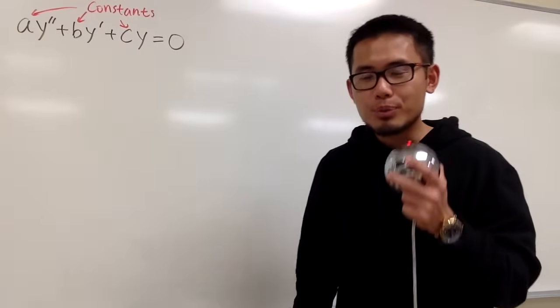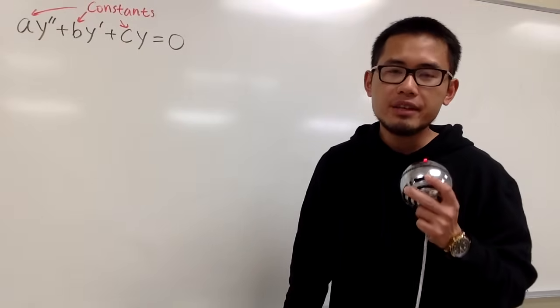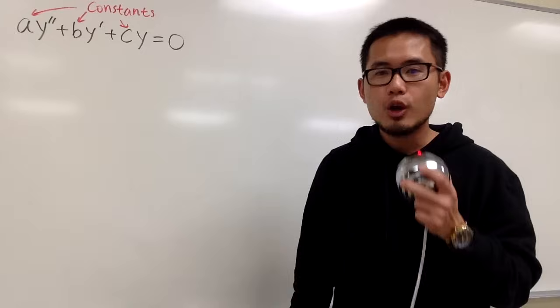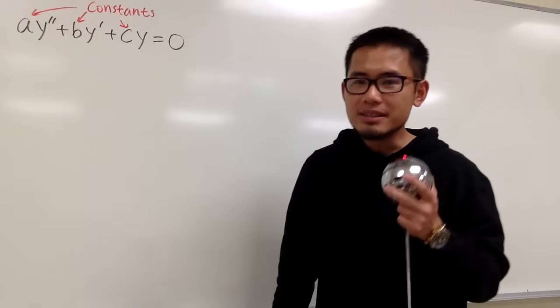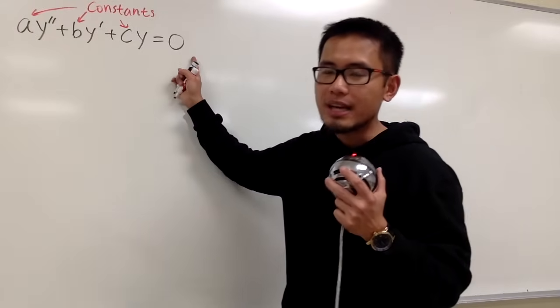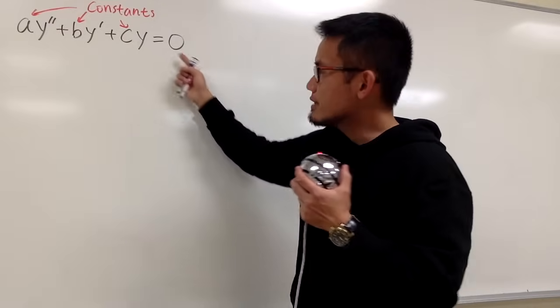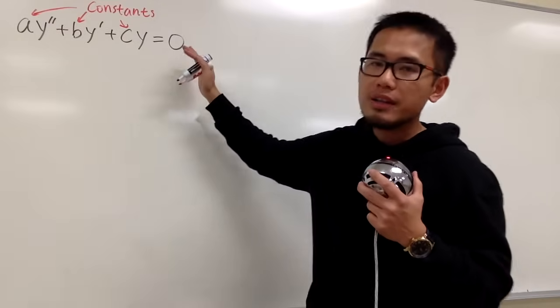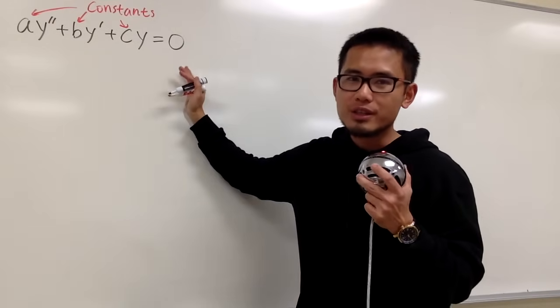In this video, I'll show you how to approach solving a second-order linear differential equation with constant coefficients. In this case, we want to focus on the right-hand side being 0, and when the right-hand side is equal to 0, this is called the homogeneous situation.